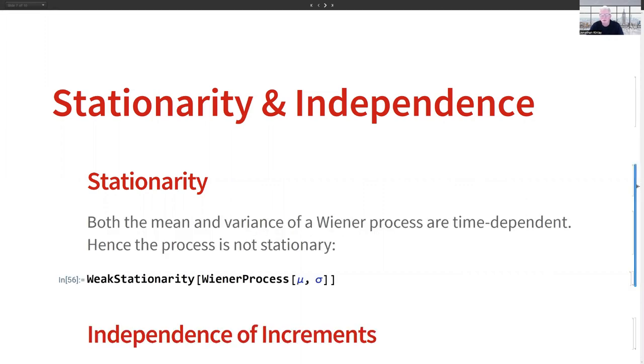And if you recall, the mean of the Wiener process has the form t times mu, where mu is the mean of the Wiener process itself, and variance t times sigma squared. So both the mean and the variance are time dependent, and therefore the Wiener process is non-stationary.